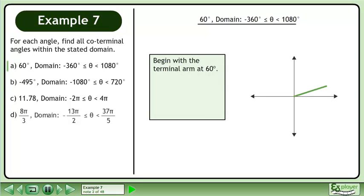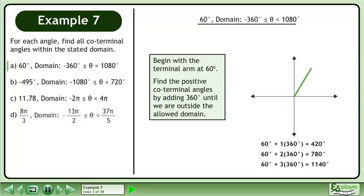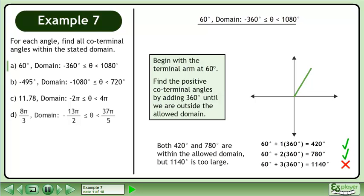Begin with the terminal arm at 60 degrees. Find the positive coterminal angles by adding 360 degrees until we are outside the allowed domain. Both 420 degrees and 780 degrees are within the allowed domain, but 1140 degrees is too large.